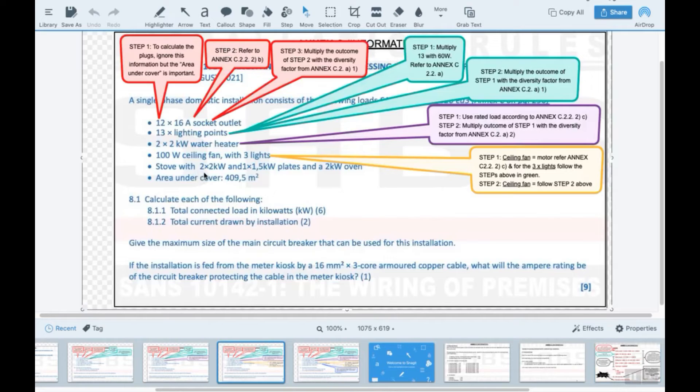For the next one, stove with two kilowatt. Remember here your diversity factor will be 0.5. The rated load, that means two times two thousand, that's four thousand, and one times one point five kilowatt, that is four thousand plus one thousand five hundred watt, and then adding a further two thousand watt. So that's seven thousand five hundred times your diversity factor of 0.5.